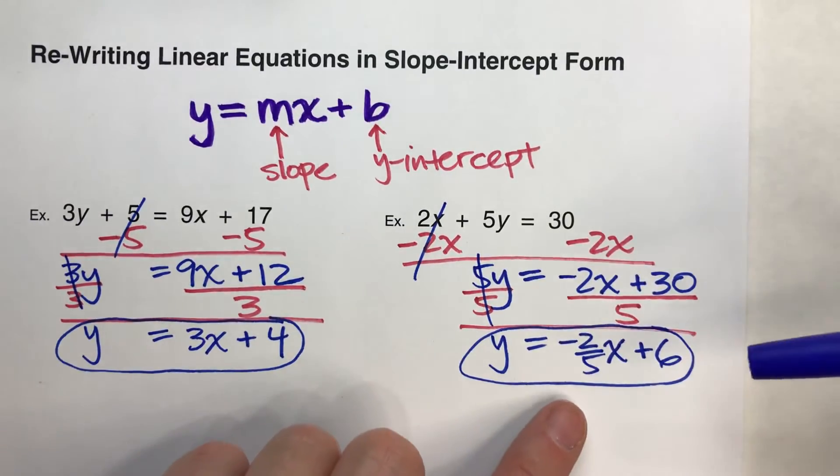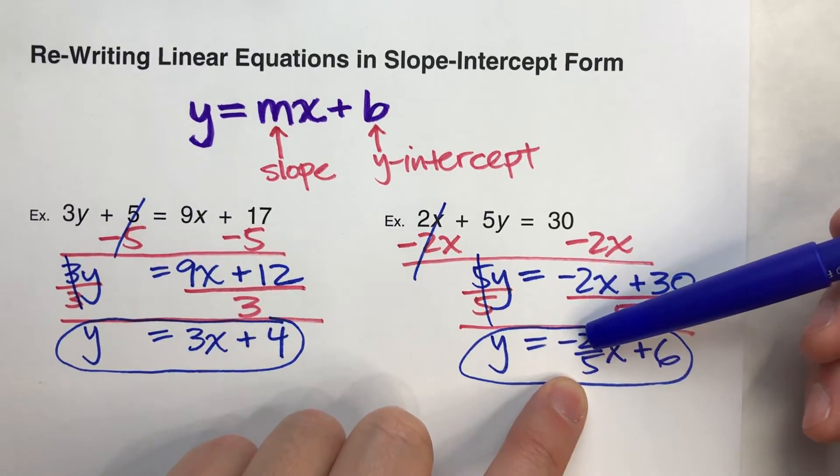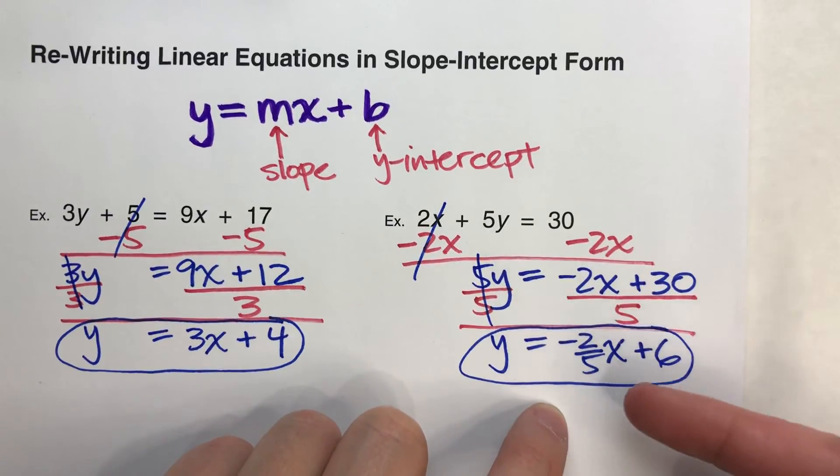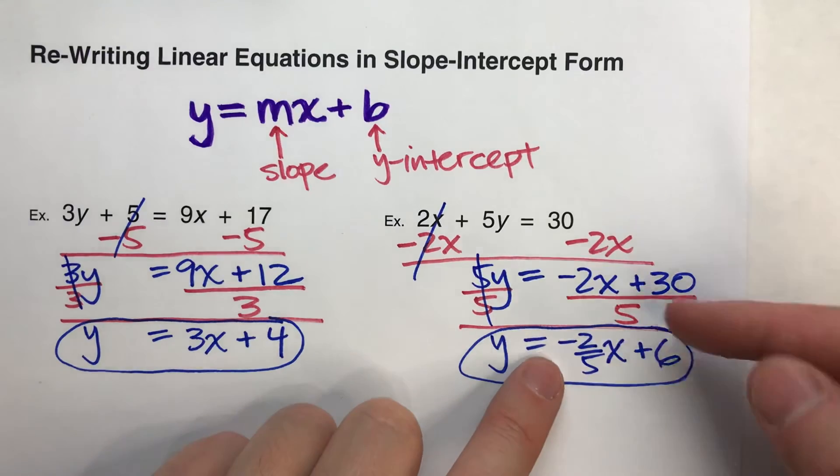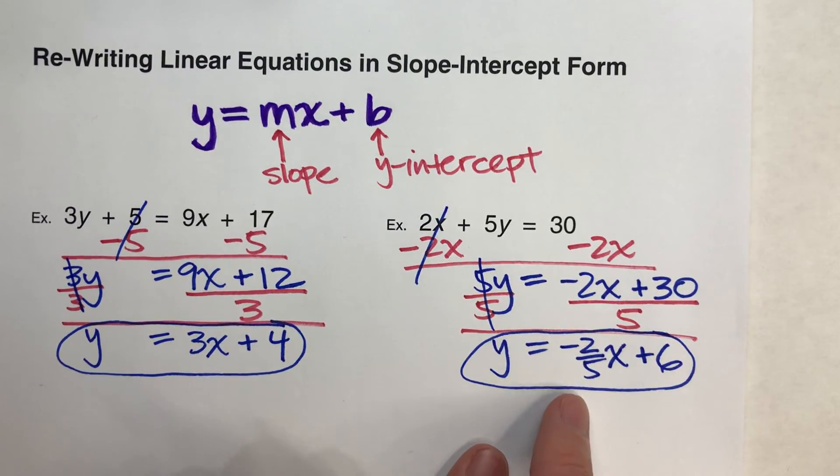Actually, graphing linear equations with a slope that's a fraction is easier to graph. So always try to keep it as a fraction. Don't turn this into a decimal, like negative 0.4, because how do you graph negative 0.4? But if you keep it as a fraction, now you know your rise is negative 2 and your run is 5, and you can easily plot that out.